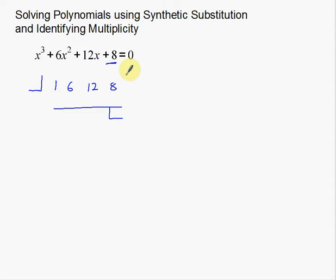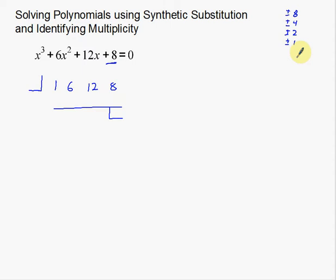The number I'm substituting into the box is going to be a factor of 8. Factors of 8 could be 8, 4, 2, and 1 — and also their negatives, so there are actually 8 different factors of 8. As numbers get bigger, we get more and more factors. I need to test out a couple of these factors to see what's going to work.